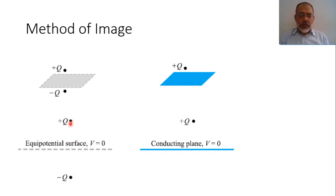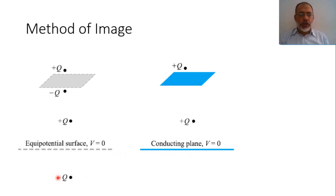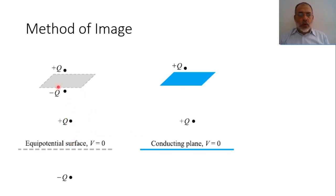The distance here means the normal distance. So effectively, from an electrical point of view, this configuration is equivalent to the dipole configuration. In other words, we can replace the conducting plane or the equipotential plane by an image charge. This image charge has a negative value of the original charge, and is at the same distance from the surface as the original charge. This is what we call image theory or the method of images.